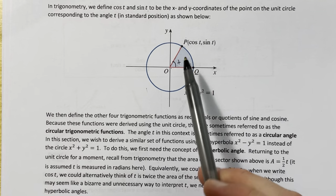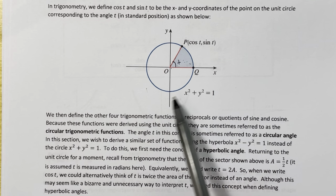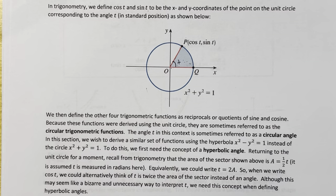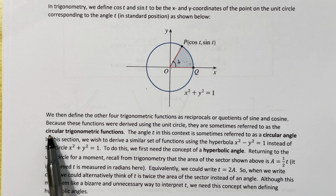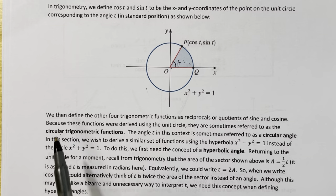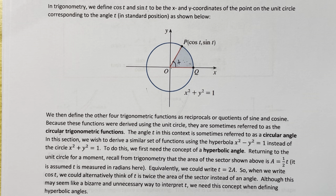Because those functions were defined using a unit circle, we sometimes refer to them as the circular functions or circular trigonometric functions. That's probably a term you've never heard before — we'll only use it when we need to distinguish these from the hyperbolic functions we're about to define.